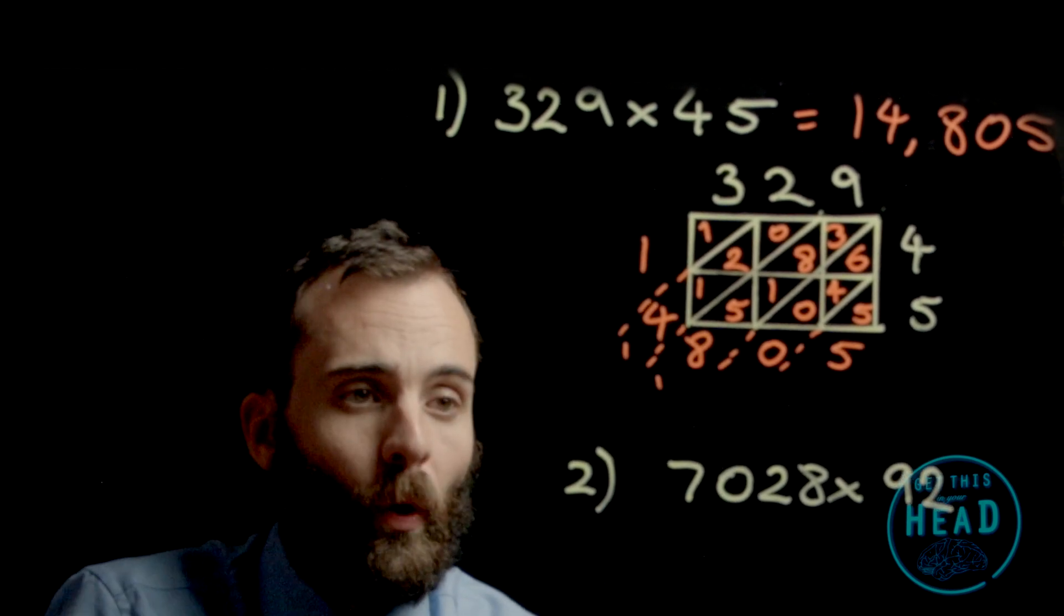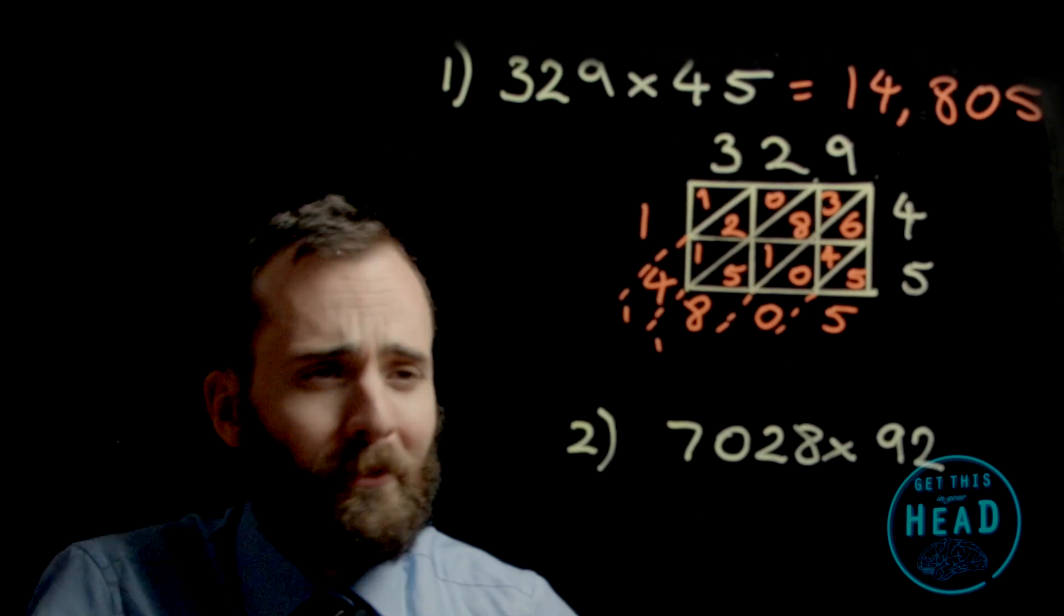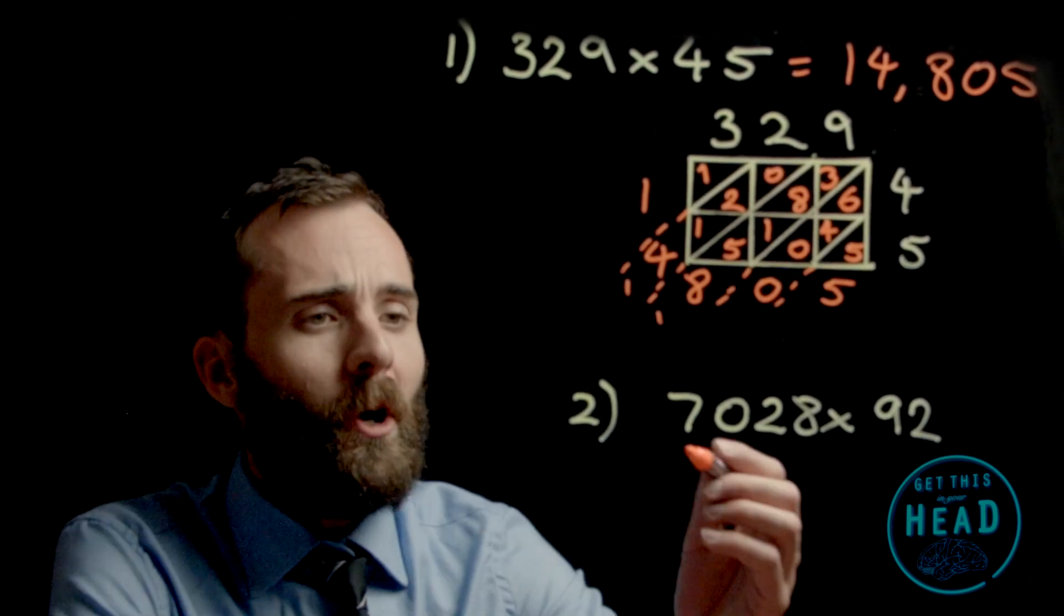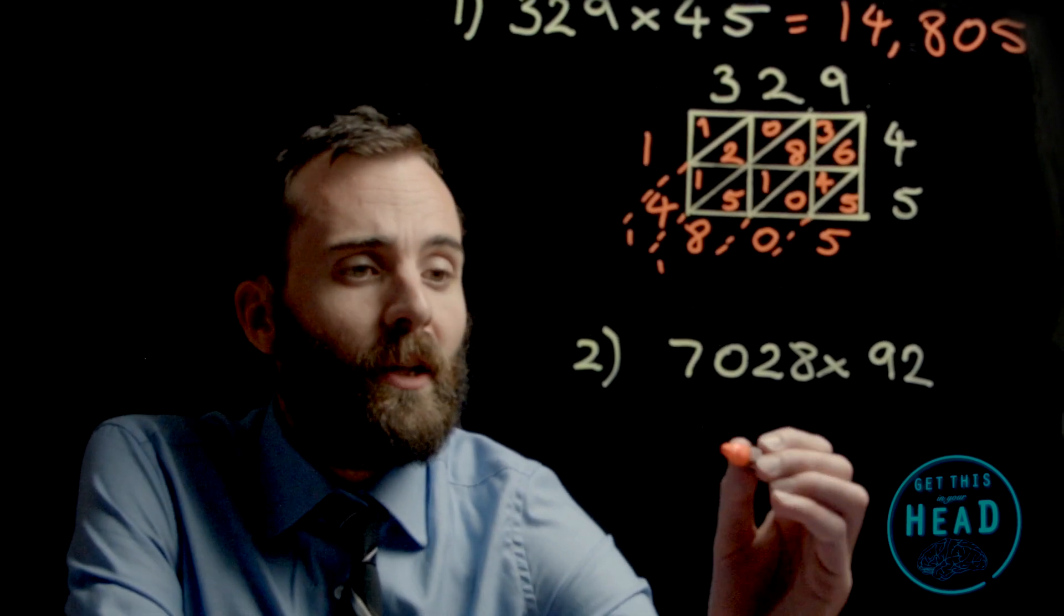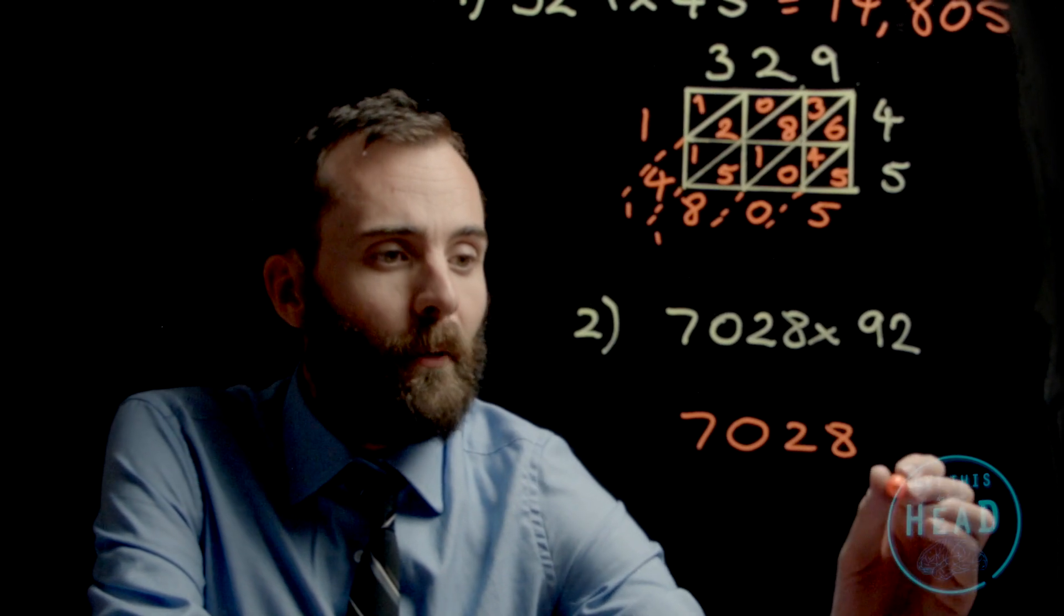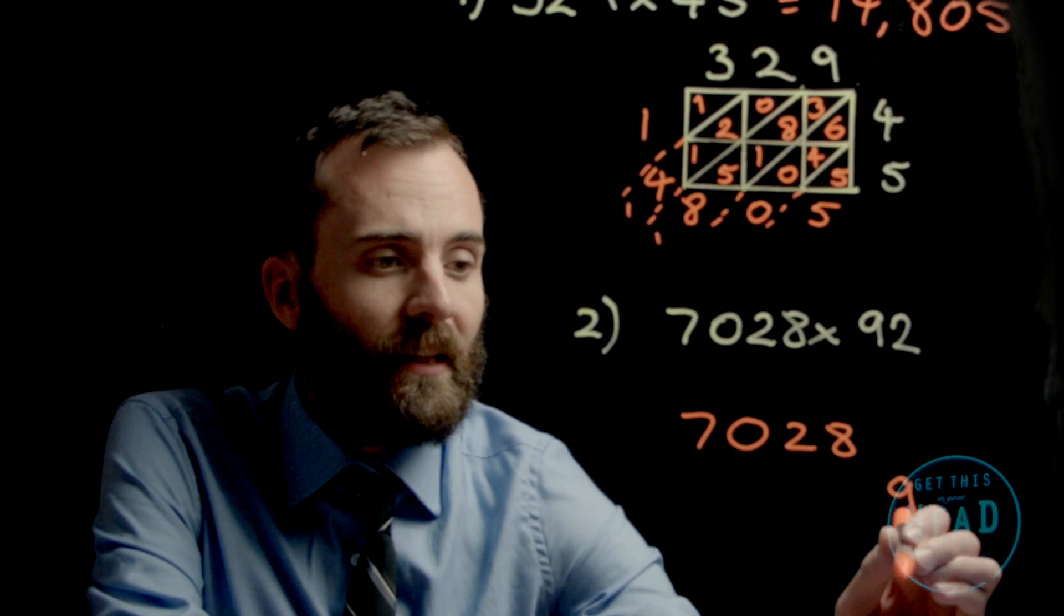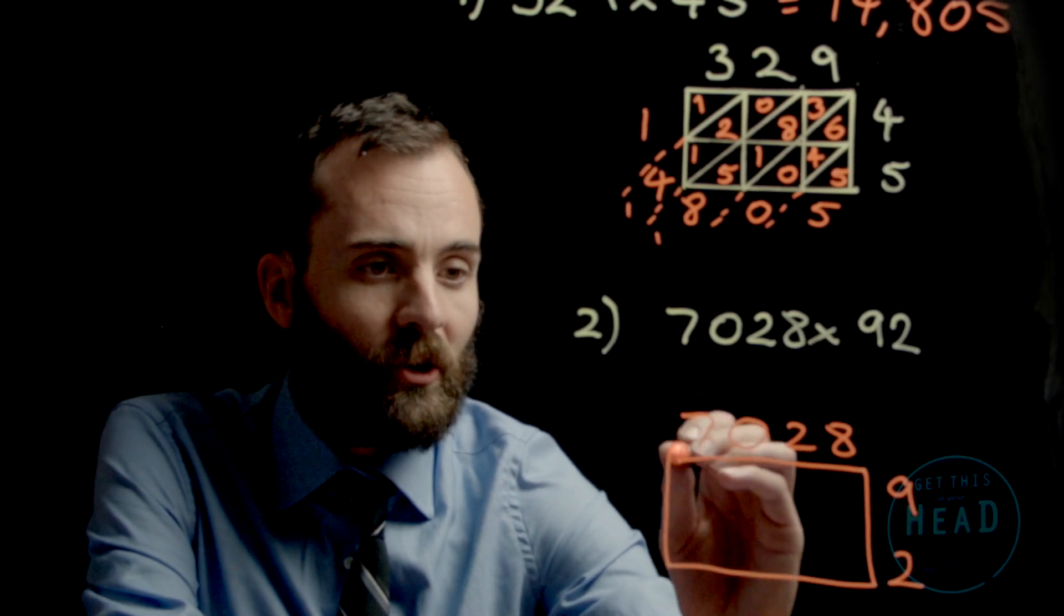Let me show you that again with the second question, but I'll draw the grid freehand. Use a ruler yourself so you can see exactly what's going on. 7,028 multiplied by 92. I have my grid that I'm constructing.